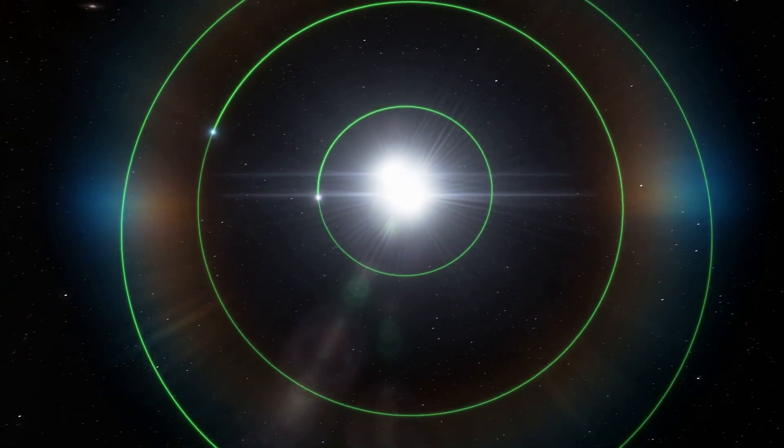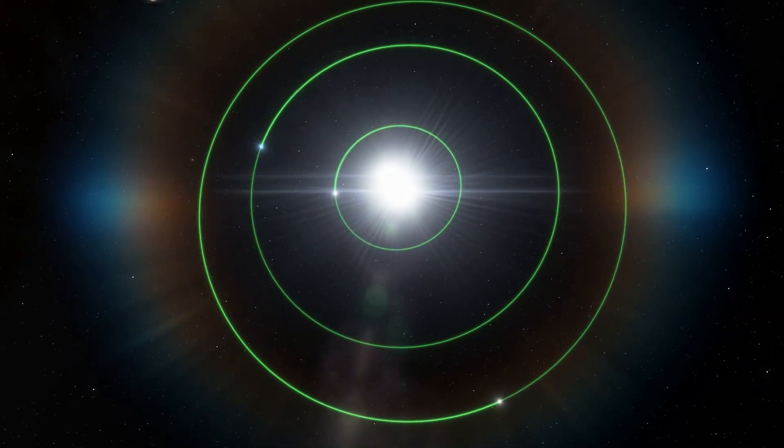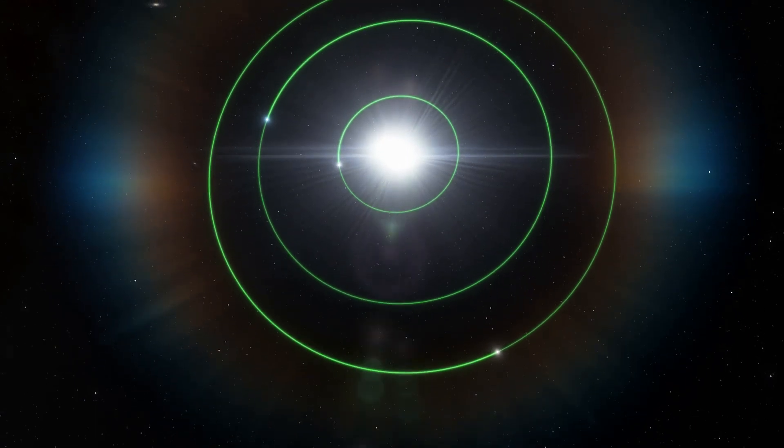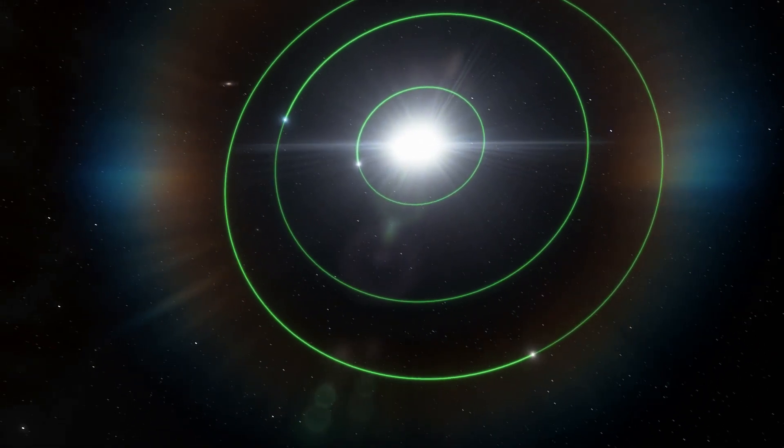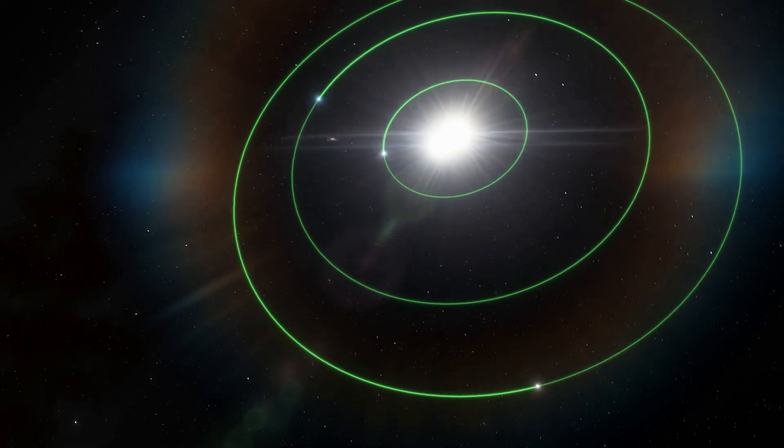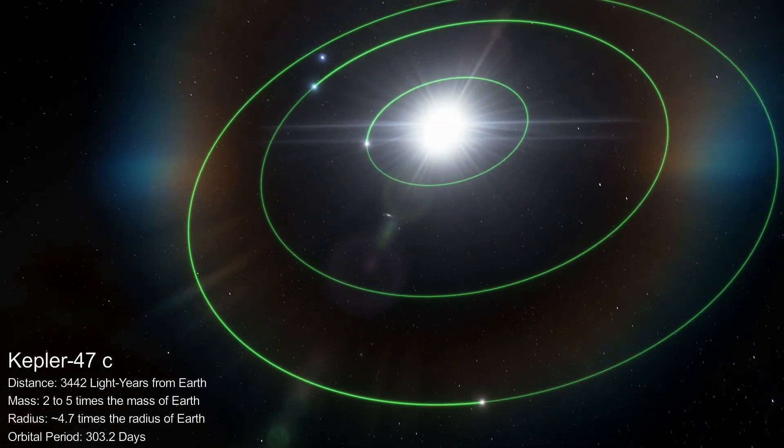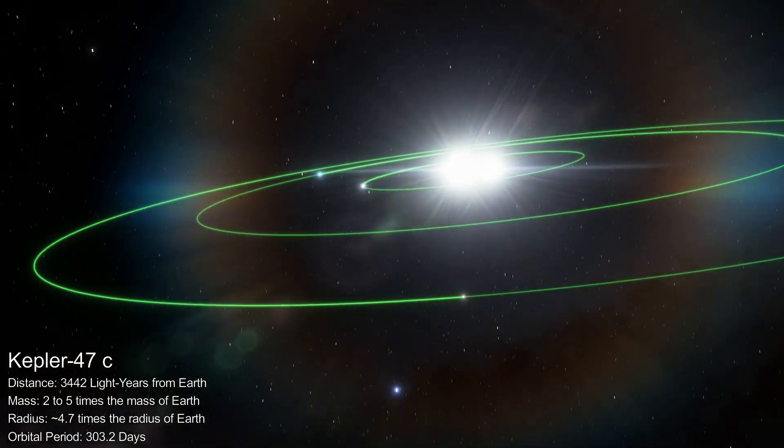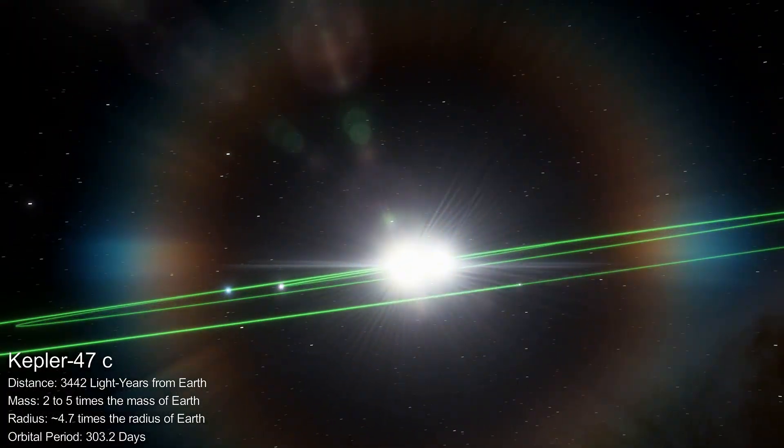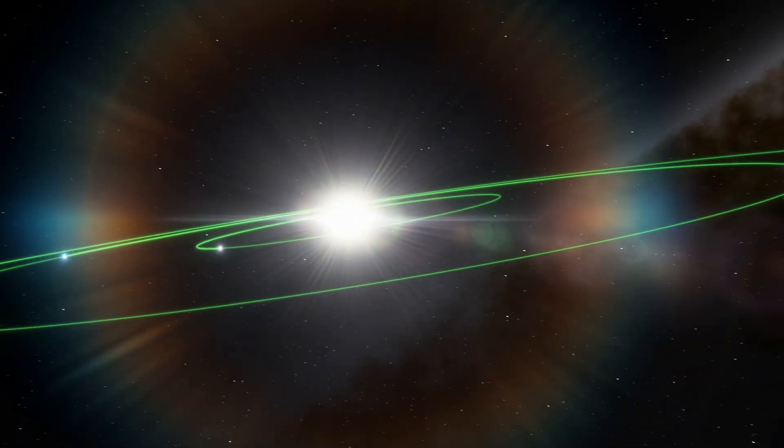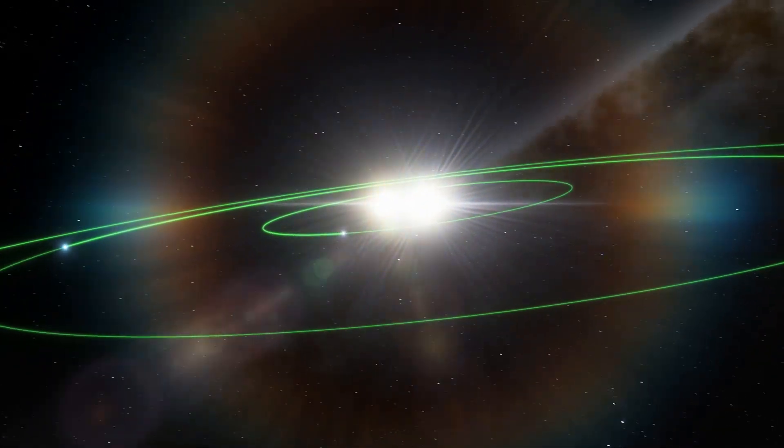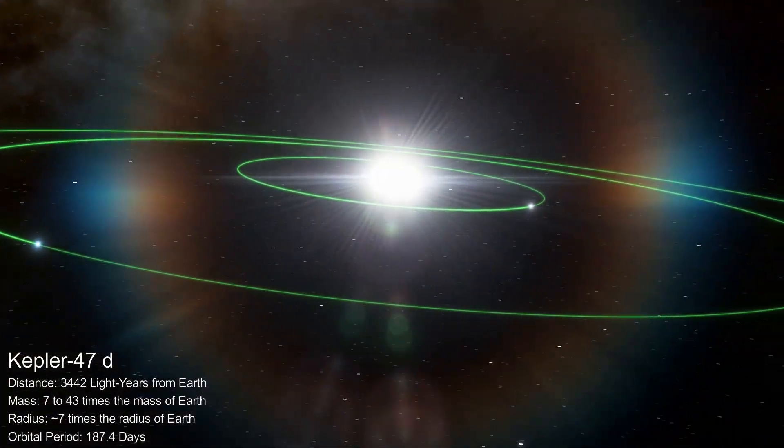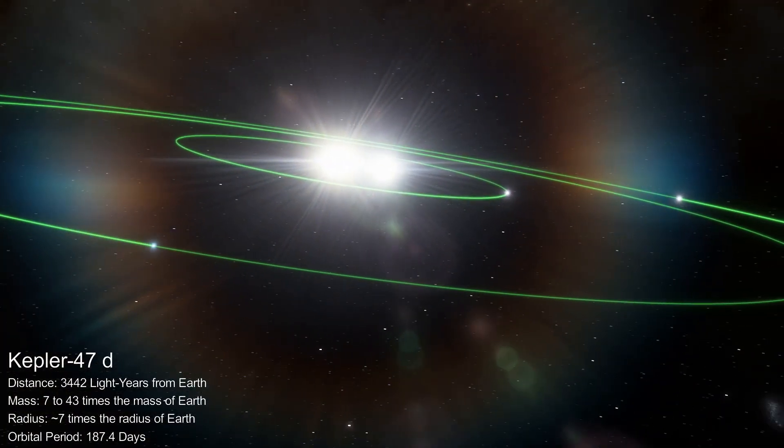However, while no public mention of circumbinary planets is complete without at least a passing reference to Tatooine from Star Wars, these worlds are too big and too low density to be like the dusty world the Skywalkers once called home. Nevertheless, the outer two planets, D and C, do lie within the Circumbinary Habitable Zone, the region where, theoretically, a planet like Earth could have sustained liquid water on its surface.